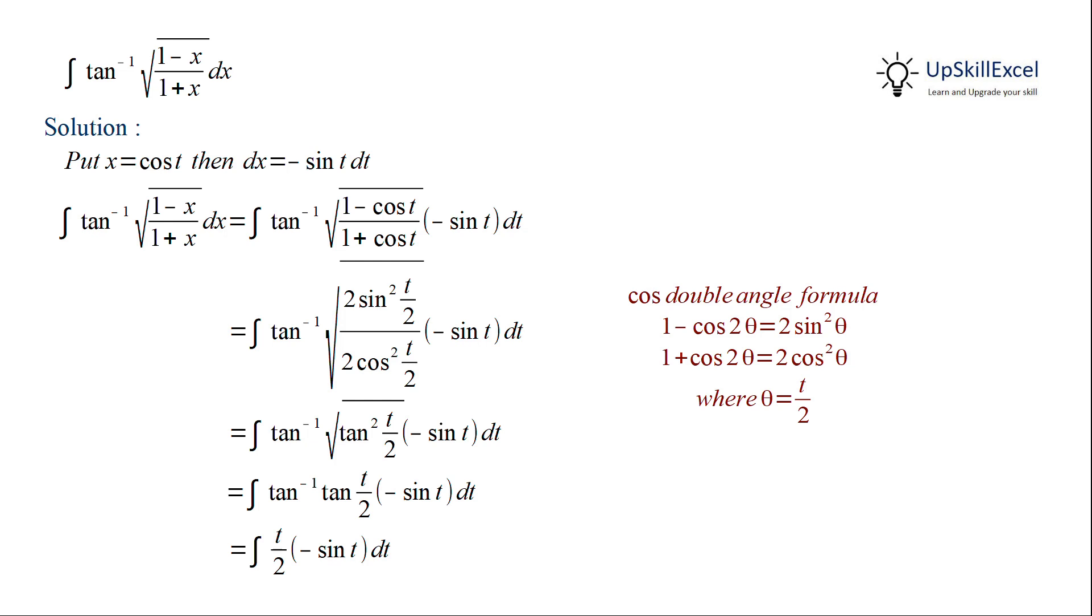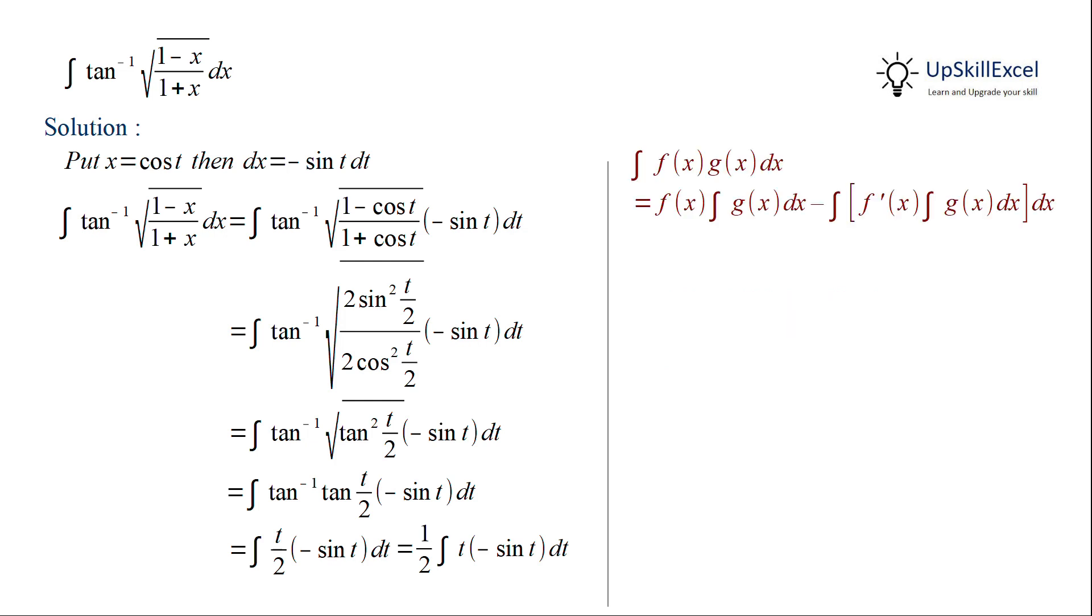Half being a constant can be taken out. Here we have integration of product of two functions. So, we can integrate this by integration by parts where f of x will be equal to t and g of x is equal to minus sin t.